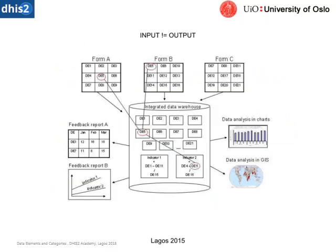Let's look at what data elements do in the system and how they interact with indicators. At the top we have Form A, Form B, Form C, with a bunch of data elements in each form. We're going to look at data element 5, which is in Form A and Form B. Once entered, those go into the data warehouse in DHIS 2 and are stored as data element 5. We then use data element 5 as part of an indicator — in this case, data element 4 plus data element 5 divided by data element 15 — giving us Indicator 2. This clearly demonstrates the relationship between a data element and an indicator, and importantly, you can make, delete, and change indicators in the system without affecting the data actually stored in the data elements. Finally, with Indicator 2 we can make a report and see what we're wanting to show.